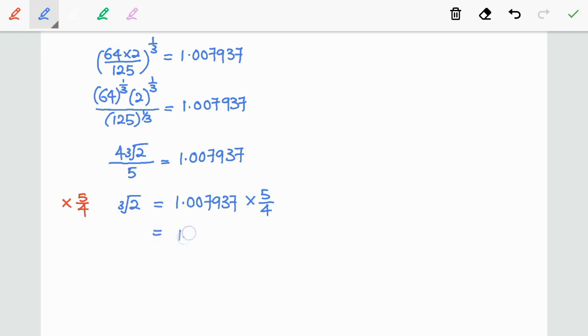So finally we get cube root of 2 is equal to 1.007937 times 5/4 and this gives us the answer 1.25992 correct to 5 decimal places. That's it, thank you.